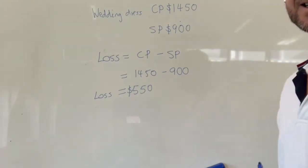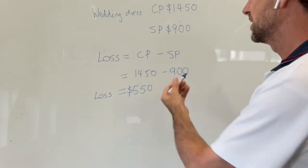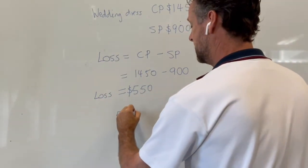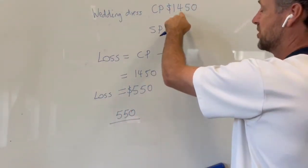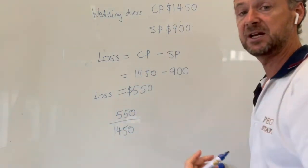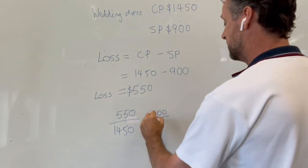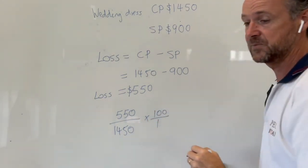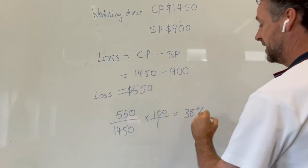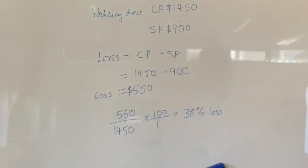Now we want to express that loss as a percentage of the original price. So the $550 goes over the original price of $1,450, and then to turn any fraction into a percentage we multiply by 100. That tells us it is a 38% loss on the original purchase.